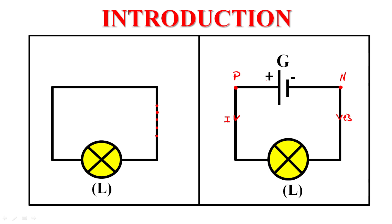So why do we have a flow of electrons or current in this circuit? Because we have something called potential difference. The potential difference is the cause of the flow of electrons in an electric circuit. The electric potential at P is Vp and the potential at N is Vn. There is a difference in potential because there is a difference in signs — one plus, one minus. Vp is greater than Vn, and this difference in potential causes electrons to flow from N to P in this circuit.